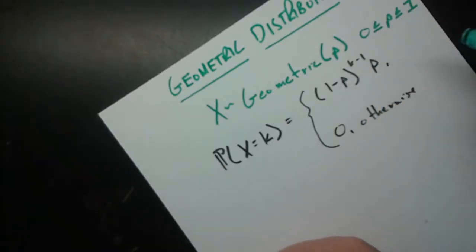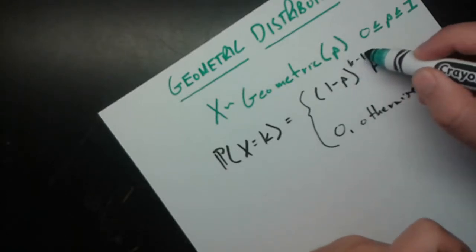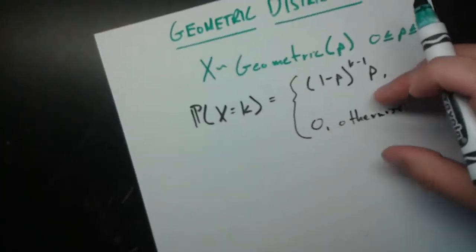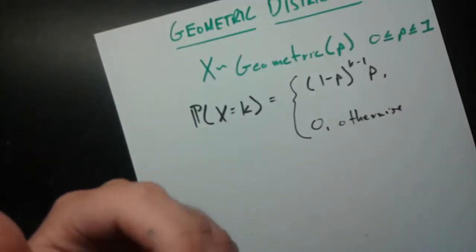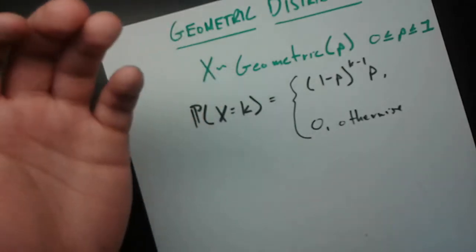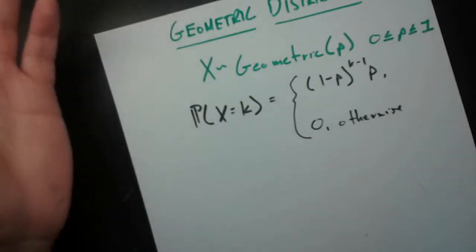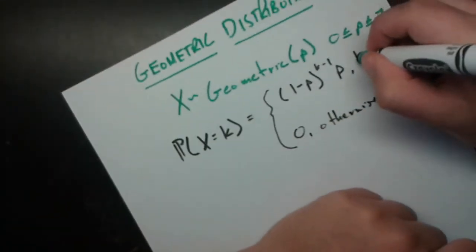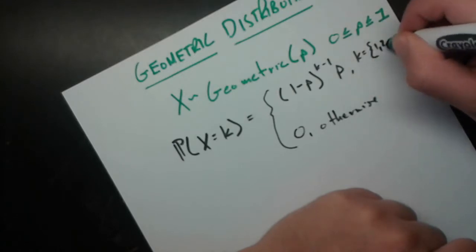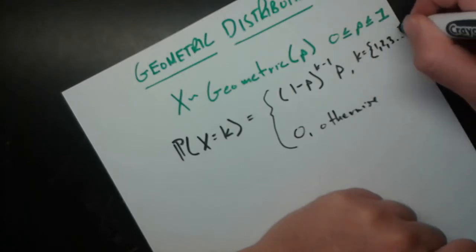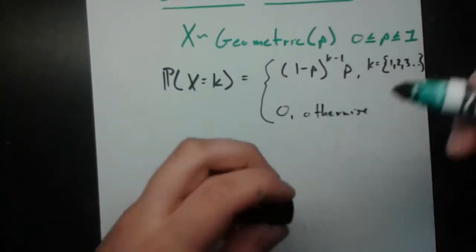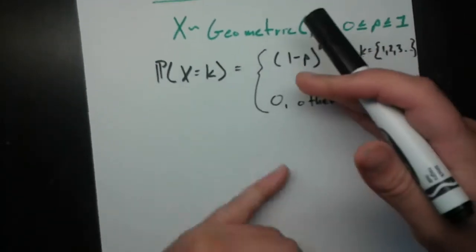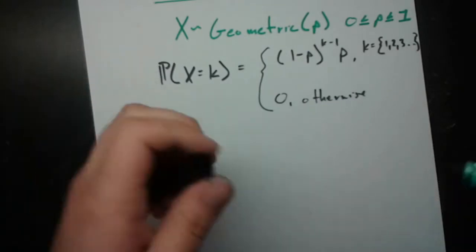We need to specify what values k can take. k cannot be zero, because mathematically that gives a negative exponent, and intuitively it would mean we've gotten a success without any trials, which isn't physically possible. So k is in the set of integers from 1 to infinity. Don't include zero for this distribution.